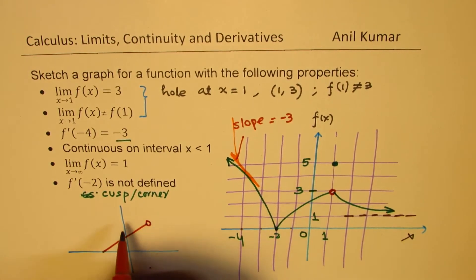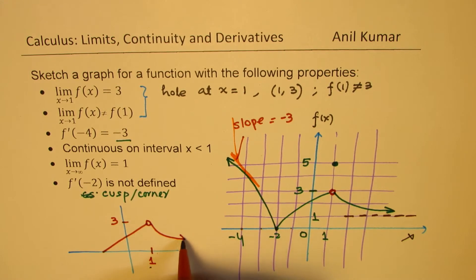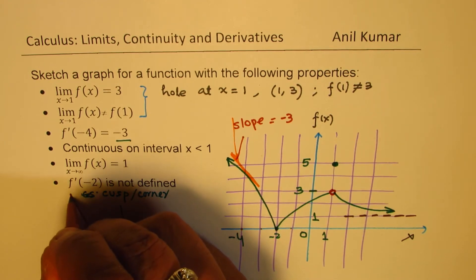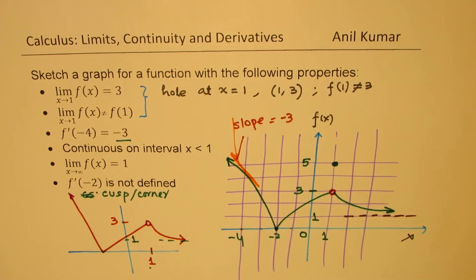Then we have this value, which is at 1 and 3. Then we have a function which is approaching 1 as x approaches a large value. So this is 1. And on this side, we could have something like this. Where there could be a point.